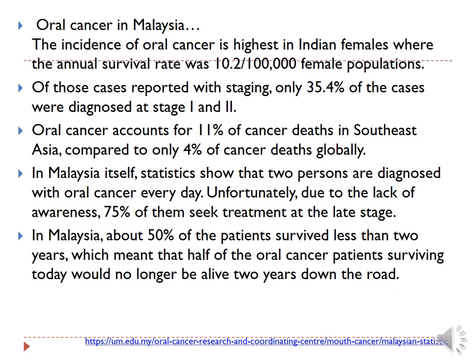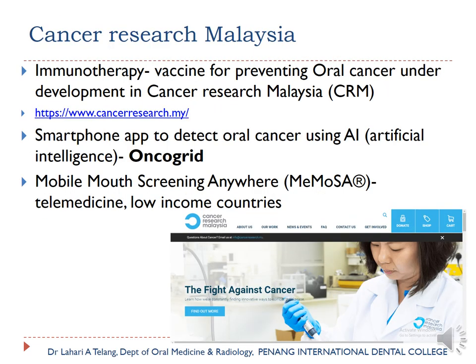On a brighter note, there is significant cancer research happening in Malaysia. Cancer Research Malaysia is working on an immunotherapy vaccine to prevent oral cancer, still under development. There is also a smartphone app called OncóGrid that uses artificial intelligence to detect oral cancer.